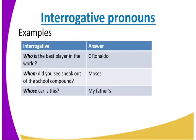For example: Who is the best player in the world? When we use this interrogative pronoun and ask a question, we expect the answers to relate to people. For example, who is the best player in the world? The answer: it's Cristiano Ronaldo. Whom did you sneak out of the school compound with? The answer: Moses. Whose car is this? My father's. You can see the answers are all related to people.